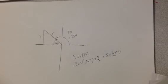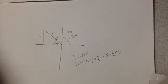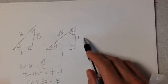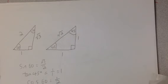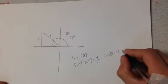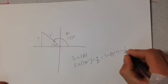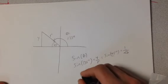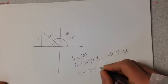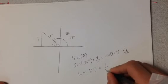And remember from our special triangle, here's 45 degrees, the opposite is 1, and the hypotenuse is root 2. So the sine of 45 degrees is 1 over root 2. That makes the sine of 135 degrees also equal to 1 over root 2.